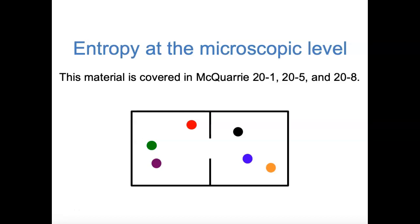Hi, everybody. In the past couple of videos, we've talked about the transfer of energy through heat and work, and the first law of thermodynamics. In the next few videos, we're going to move to the other concept that determines whether chemical processes happen spontaneously, and that's entropy. This video will be a sort of conceptual introduction to entropy, and then we'll move on in future videos to the second and third laws of thermodynamics.